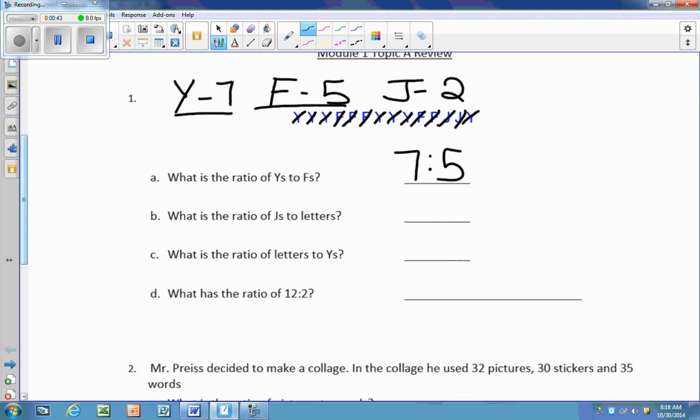What is the ratio of J's to letters? Well, first I'm going to look at my J, which is 2. And then letters are the total number of letters. So I'm going to have to add 7 plus 5, which gives me 12, and then add on the J's, which will give me 14. Which then gives me a final ratio of 2 to 14.